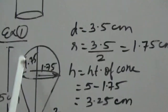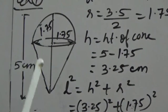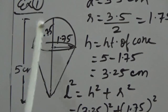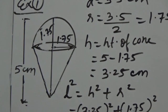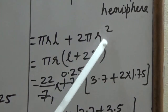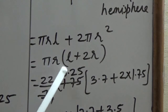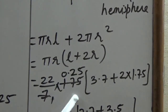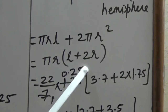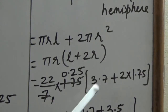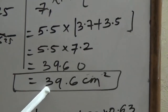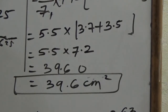Now, cone and hemisphere are combined, so the total surface area of the top = CSA of cone + CSA of hemisphere = πRL + 2πR². Taking πR common: πR(L + 2R). Substituting the values — π = 22/7, R = 1.75, L = 3.7 — and simplifying, we get the total surface area of the top as approximately 39.6 cm².